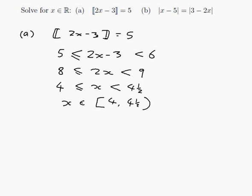Okay, now for part B. So for part B, we want to solve the floor of x take 5 is equal to the floor of 3 take 2x. Not floor, sorry. The absolute value of x take 5 is equal to the absolute value of 3 take 2x. So how do we do that? Well, we need to know what absolute value means. So let's write that down. Note.